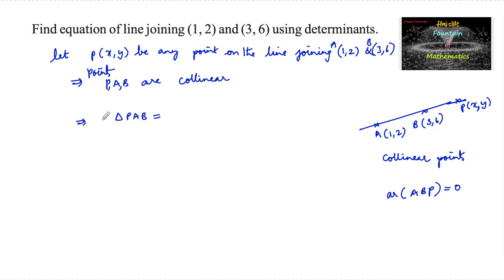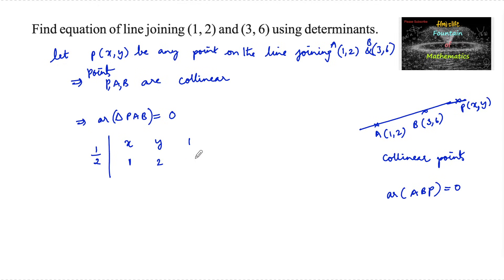Since P, A, B are collinear, the area of triangle PAB is equal to 0. That is, (1/2) times the absolute value of the determinant of the matrix with rows: (x, y, 1), (1, 2, 1), (3, 6, 1) must be equal to 0.